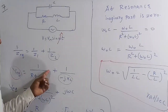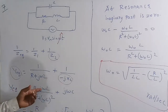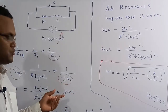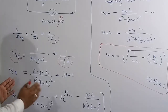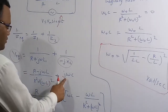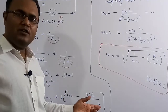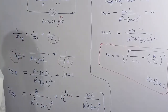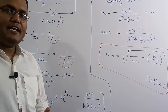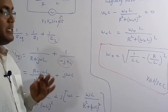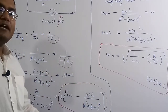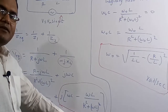Rationalizing: Y_eq = (R−jωL)/(R²+ω²L²) + jωC. Separating real and imaginary parts: real part = R/(R²+ω²L²), imaginary part = ωC − ωL/(R²+ω²L²). At resonance the circuit is purely resistive, so the admittance is purely real, meaning the imaginary part equals zero.